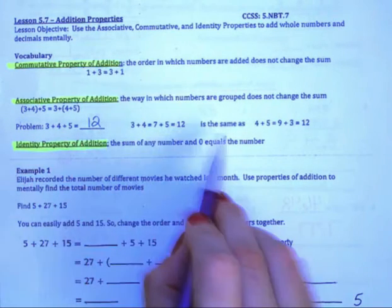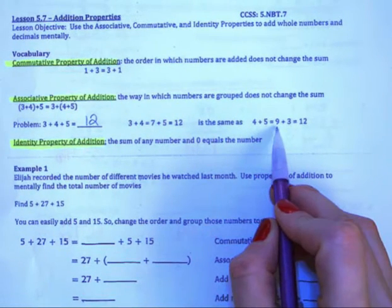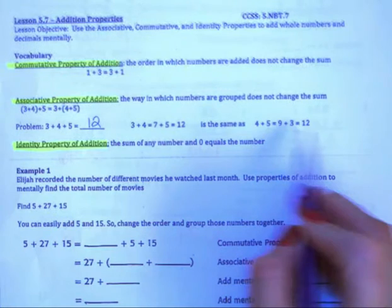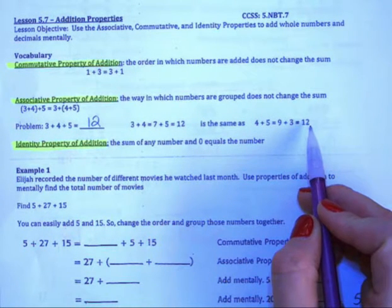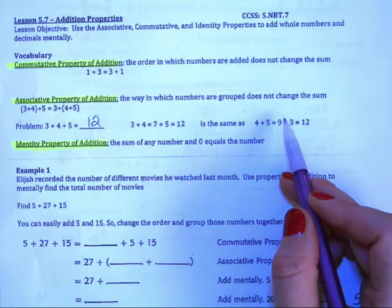So we see that, and that is also the same as if we were to do 4 plus 5 to equal 9 and then add the 3 in at the end to equal 12. So you can do them in any order that you want and group them differently based on the numbers that you would like to put together first.